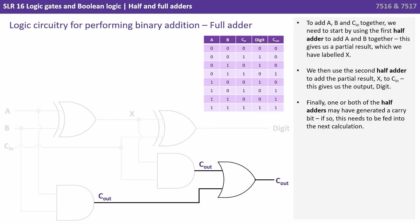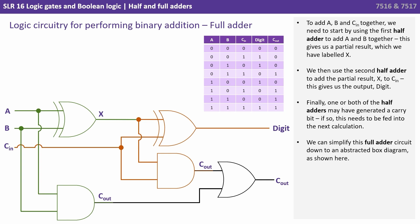Finally one or both of the half adders may have generated a carry bit. And if so this needs to be fed into the next calculation. We can simplify this full adder circuit down to an abstracted box diagram as shown at the top there. With a, b and c in being the possible inputs and digit and c out being the possible outputs.